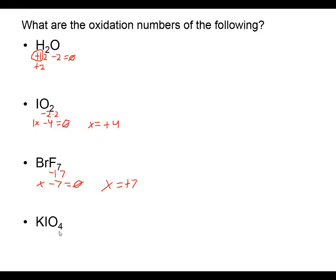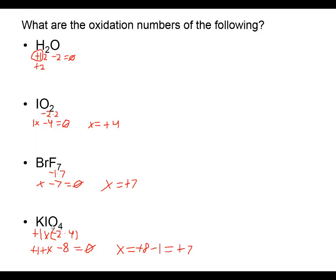If I'm looking at potassium periodate KIO₄, we have plus one for the alkali metal potassium, oxygen is a negative two, and iodine is the unknown x. There are four oxygens giving a total of negative eight. The overall compound has zero charge, so plus one plus x plus negative eight equals zero. Adding eight to both sides and subtracting one from both sides gives x equal to a positive seven for iodine's oxidation number in periodate.